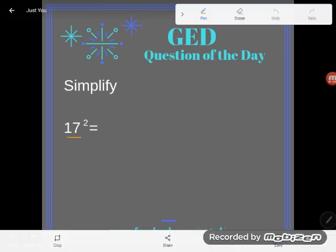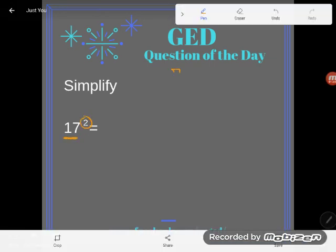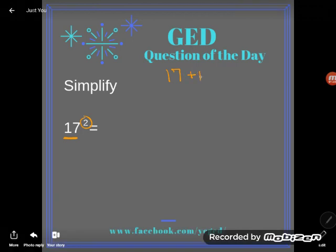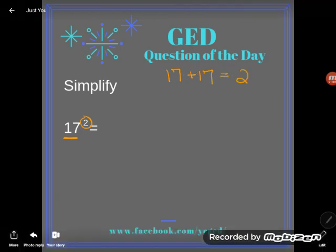Well, just like we have a shortcut way of talking about repeated addition - 17 plus 17 could be written as 2 times 17.